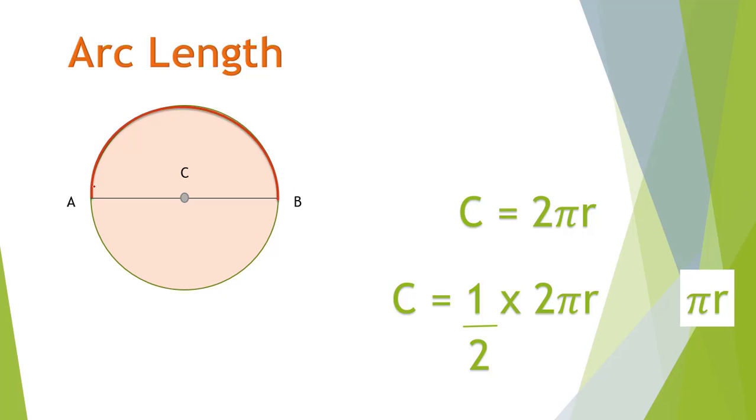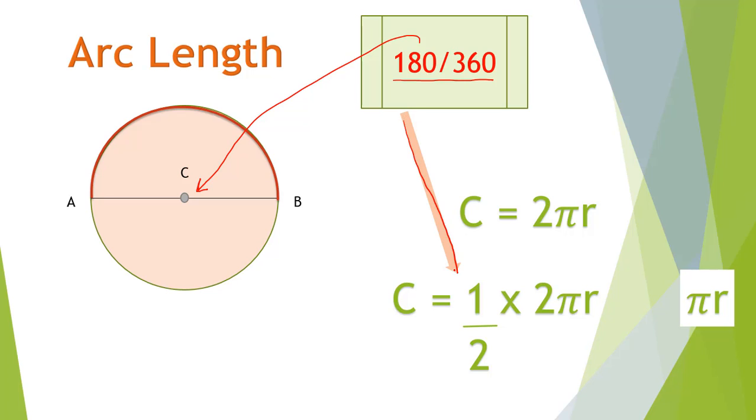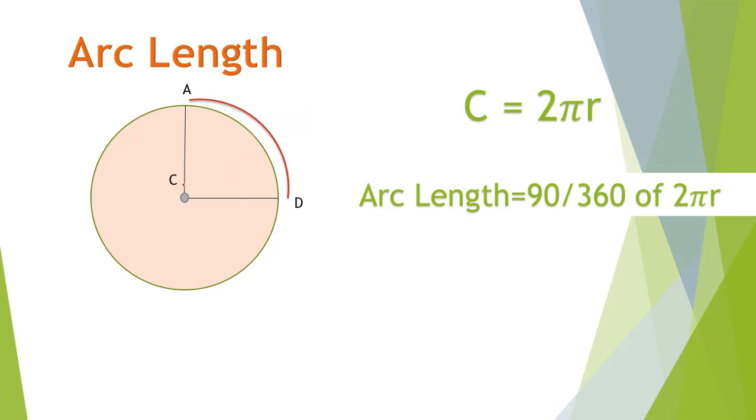This arc measures 180 degrees and 180 degrees is half of 360 degrees. If you divide the angle of the arc with the total angle around the circle, then you will get the ratio of that arc with a complete circumference. If central angle is 90 degrees, then arc's length is 90 over 360 of 2 pi r. This fraction tells us how much of the circle this arc represents.